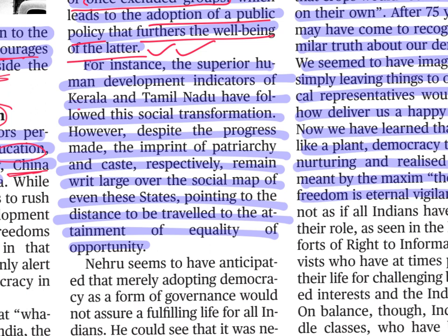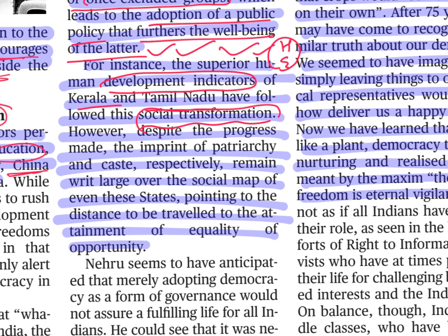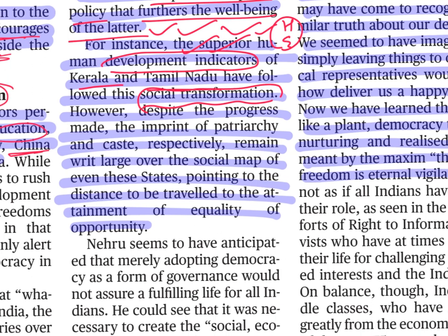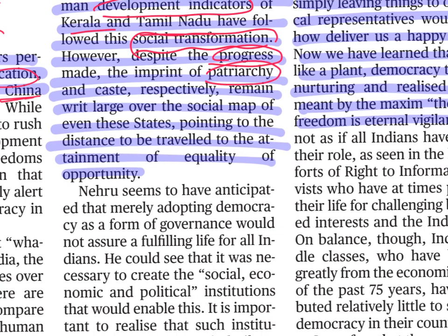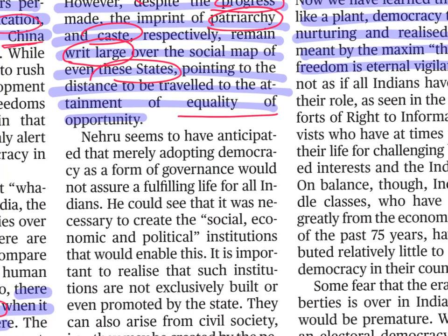The author notes that in Kerala and Tamil Nadu, very good human development indicators in health and education exist because society gave more importance to lower economic and caste groups, who also participated in governance. A society which gives equal opportunity to all sections progresses. However, even in these states, patriarchy and caste remain clearly visible, and we still have a long distance to travel to attain equality of opportunity.